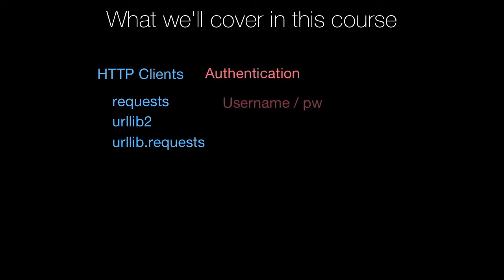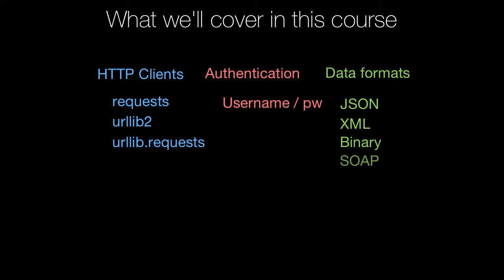Many of these services are going to require us to authenticate, to log in. So we're going to see how we can do username and password authentication to access restricted services. We're also going to work with a variety of different data formats. When we talk to these HTTP services, they might send us data back in the form of JSON, XML, super complicated XML in the form of SOAP, or even binary data. We'll look at how each of these data formats is managed and worked with in Python.